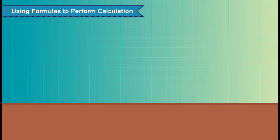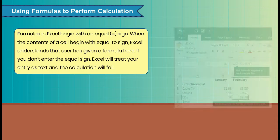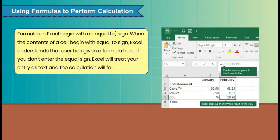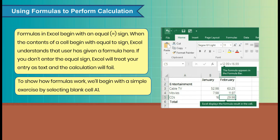Using Formulas to Perform Calculation. Formulas in Excel begin with an equal sign. When the contents of a cell begin with equal to sign, Excel understands that user has given a formula here. If you don't enter the equal sign, Excel will treat your entry as text and the calculation will fail.